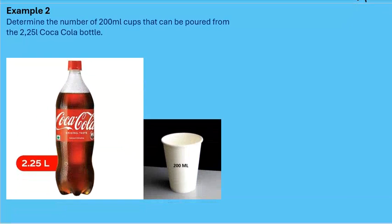In example two, we have a Coca-Cola bottle and a cup. We want to know how many 200-milliliter cups we can get from 2.25 liters of Coca-Cola. This is a simple calculation: divide the volume of the Coke by the volume of the cup. However, the volume of the Coca-Cola is in liters while the volume of the cup is in milliliters, so we have to convert one.